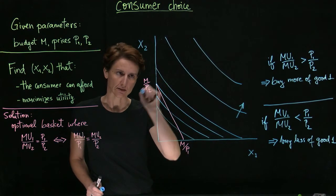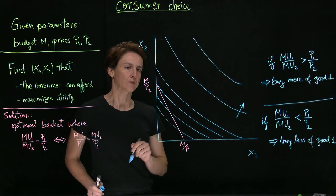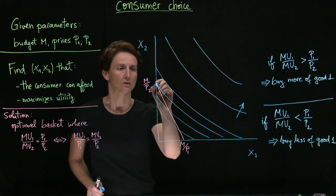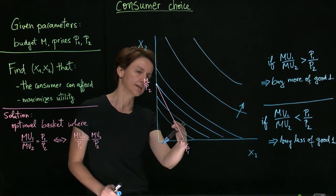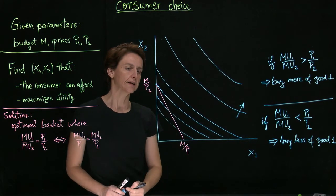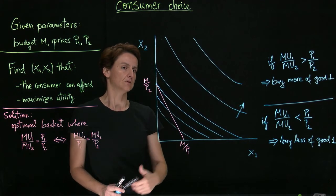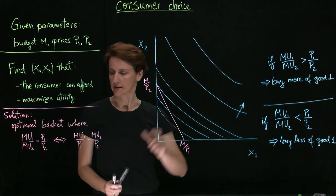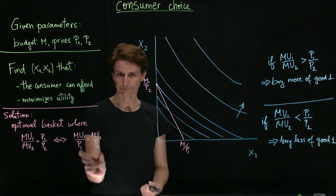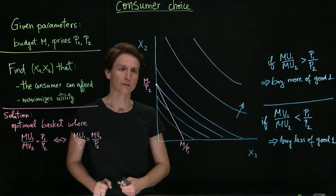However, we also can't improve. So then this would be what we'd call a corner solution because it's at the corner of the budget constraint. And although that equality is not met, we are nonetheless at the optimum point.